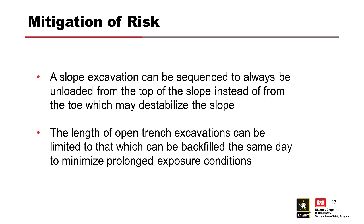A few examples of specification requirements that can be used to mitigate construction risks include sequence requirements — for example, requiring a slope excavation to proceed from the top down instead of starting at the toe, which could lead to destabilizing the slope. Another example is limiting the length and duration of open trenches. A third example is video inspections of drain pipes during installation and right after backfilling around the drain pipes, which has become a pretty standard practice in the industry.